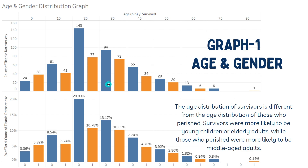For example, the bar at the left of the male section indicates the 0-to-10 age bin — there were 160 male passengers under the age of 10 on the Titanic, and 143 of them survived. This means that 90% of male passengers under age 10 survived the disaster.